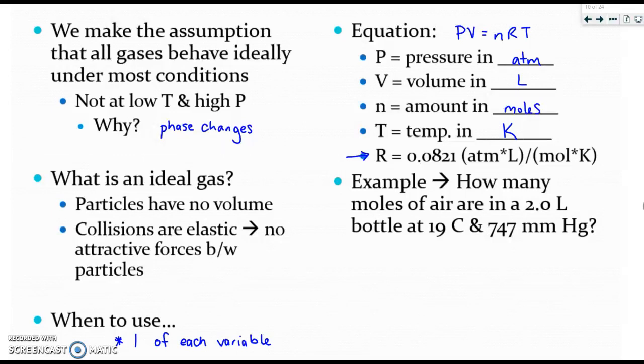So let's do this example problem here. It's asking for moles. That's our N amount. It provides us with a volume. It gives us a temperature that we have to convert and it provides us a pressure that we have to convert. So for temperature 19 plus 273 gives us 292 Kelvin. And for pressure we're going to take our 747 and divide by 760 because that's the conversion factor. And we get 0.983 ATM.